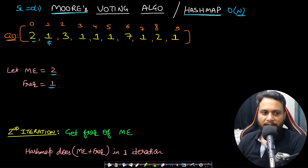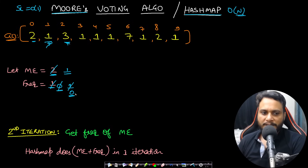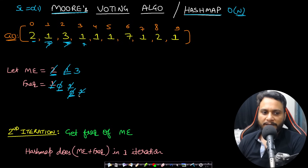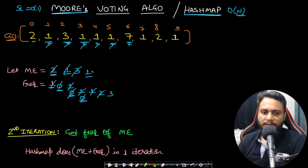If you encounter an element different from the assumed majority element, decrease its frequency. If the frequency reaches zero, reassume the current element as the new majority element. For example, if you see a three and it doesn't match, decrease frequency to zero and reassume three as majority with frequency one. When you see a non-majority element, decrease the frequency; when you see the majority element, increase it.